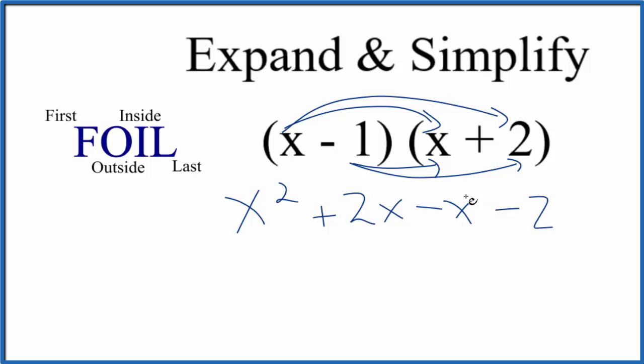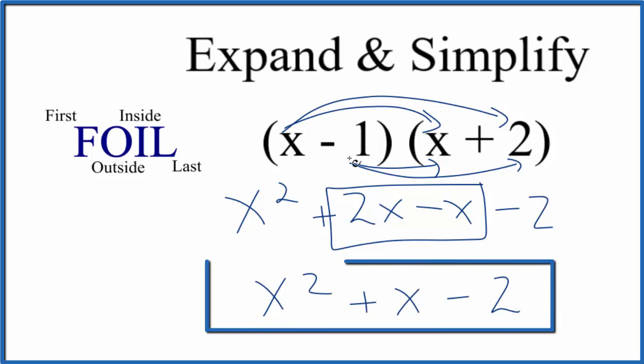And then the last term: negative 1 times 2, that's just negative 2. Since these here are similar, we can combine these two terms. 2x and minus x, that's just x, so x² plus x minus 2. So when you expand and simplify (x - 1)(x + 2), you end up with x² + x - 2.